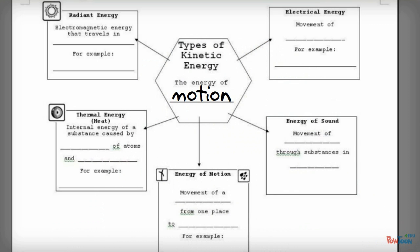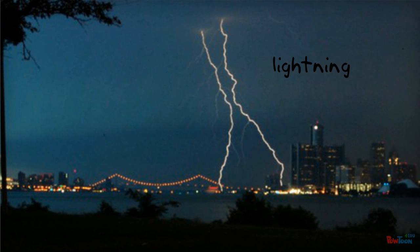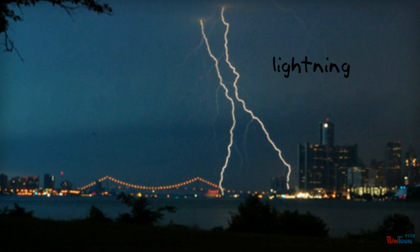Electrical energy is the movement of electrons. And you should be pretty familiar with what an electron is after going through most of chemistry. So examples of this that we deal with in our daily life are lightning and also electricity. We're pretty dependent in our society on electricity. We learn that as soon as the power goes out.